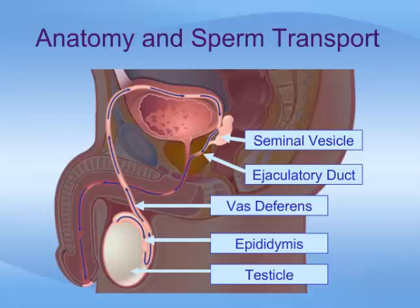Before describing the reversal procedure, let us first briefly review the male anatomy and sperm transport. Sperm is made in the testicles, or testes, which sit in the sack of skin called the scrotum. This figure shows the path of sperm as it leaves the testicles, travels through a coiled tube called the epididymis, then enters the vas deferens, also simply called the vas.